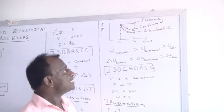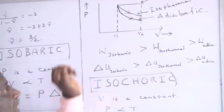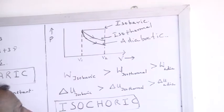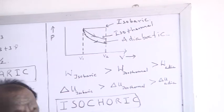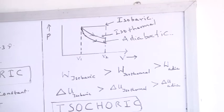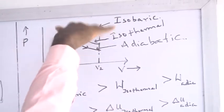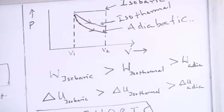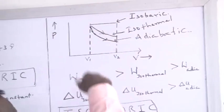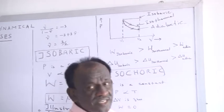I wish to correlate the three processes — isobaric, isothermal, and adiabatic — using a curve showing pressure versus volume. In the isobaric process, the pressure remains constant. The isothermal process is next. Normally, the adiabatic process is steeper than the isothermal process — this is a very important concept. To compare which process involves more work done, we look at the area under the curve. The isobaric process covers the most area, so the work done in the isobaric process is greatest. The isothermal process covers less area, so its work done is less. The adiabatic process covers the least area, so the work done is least.